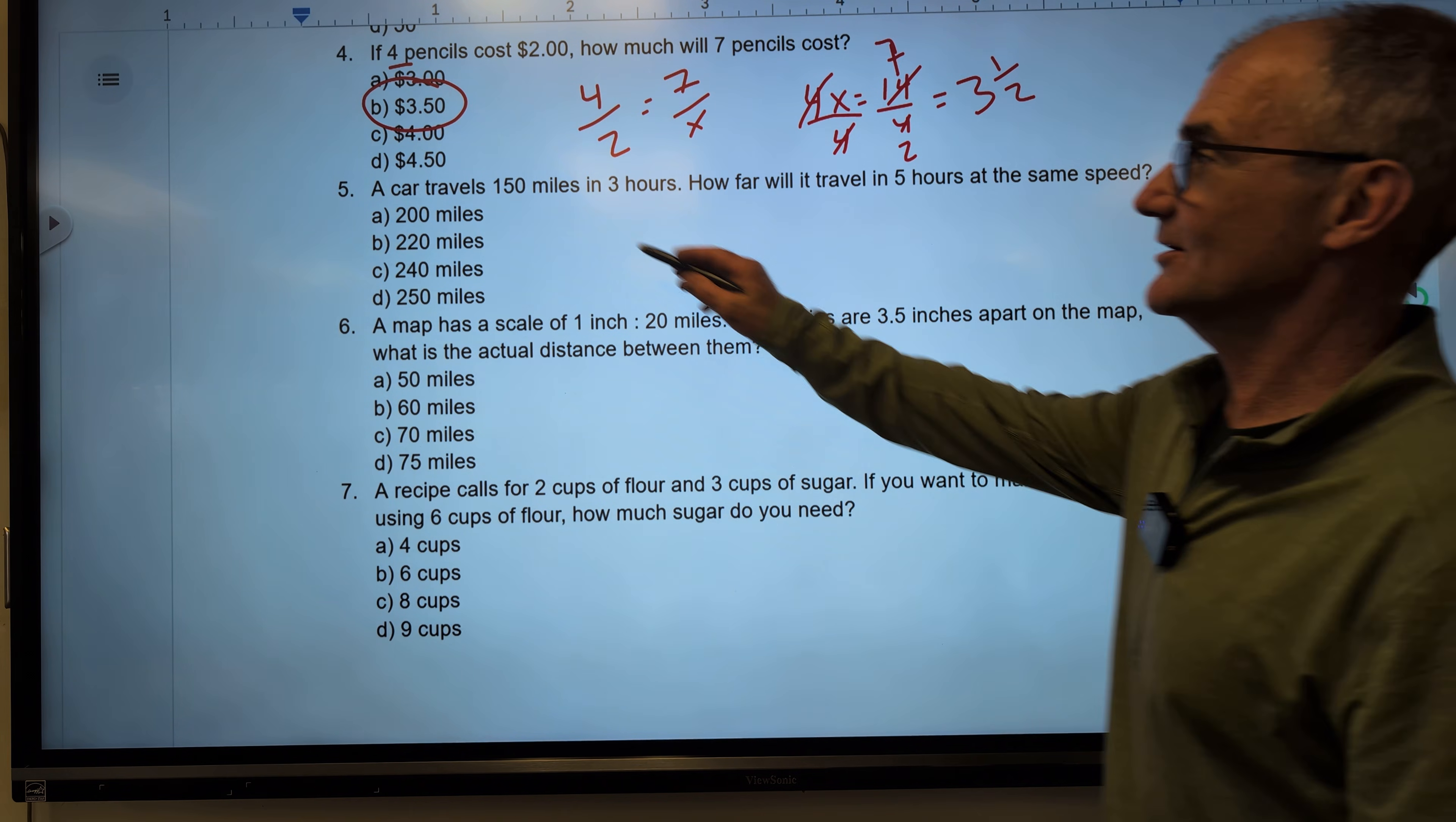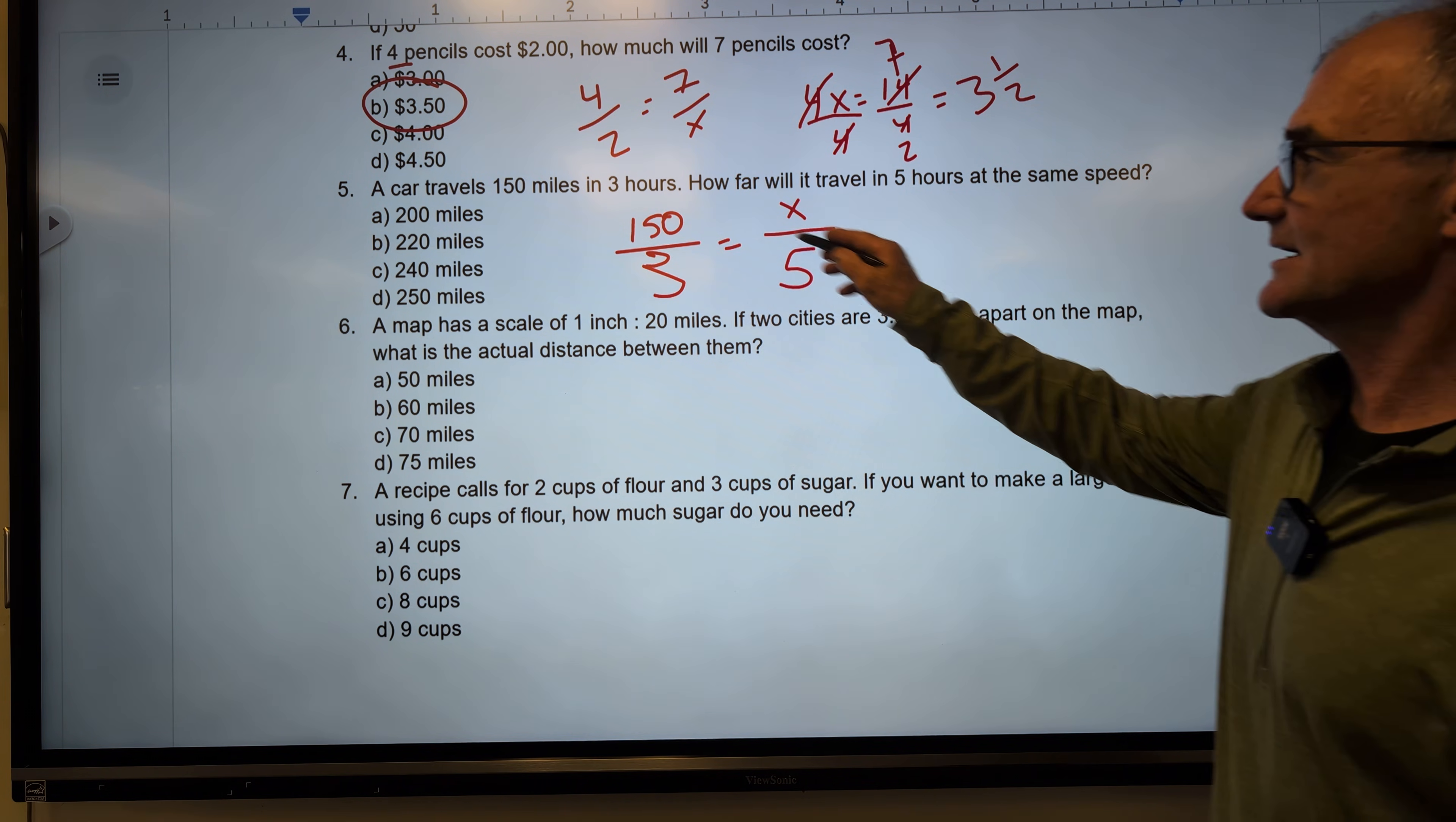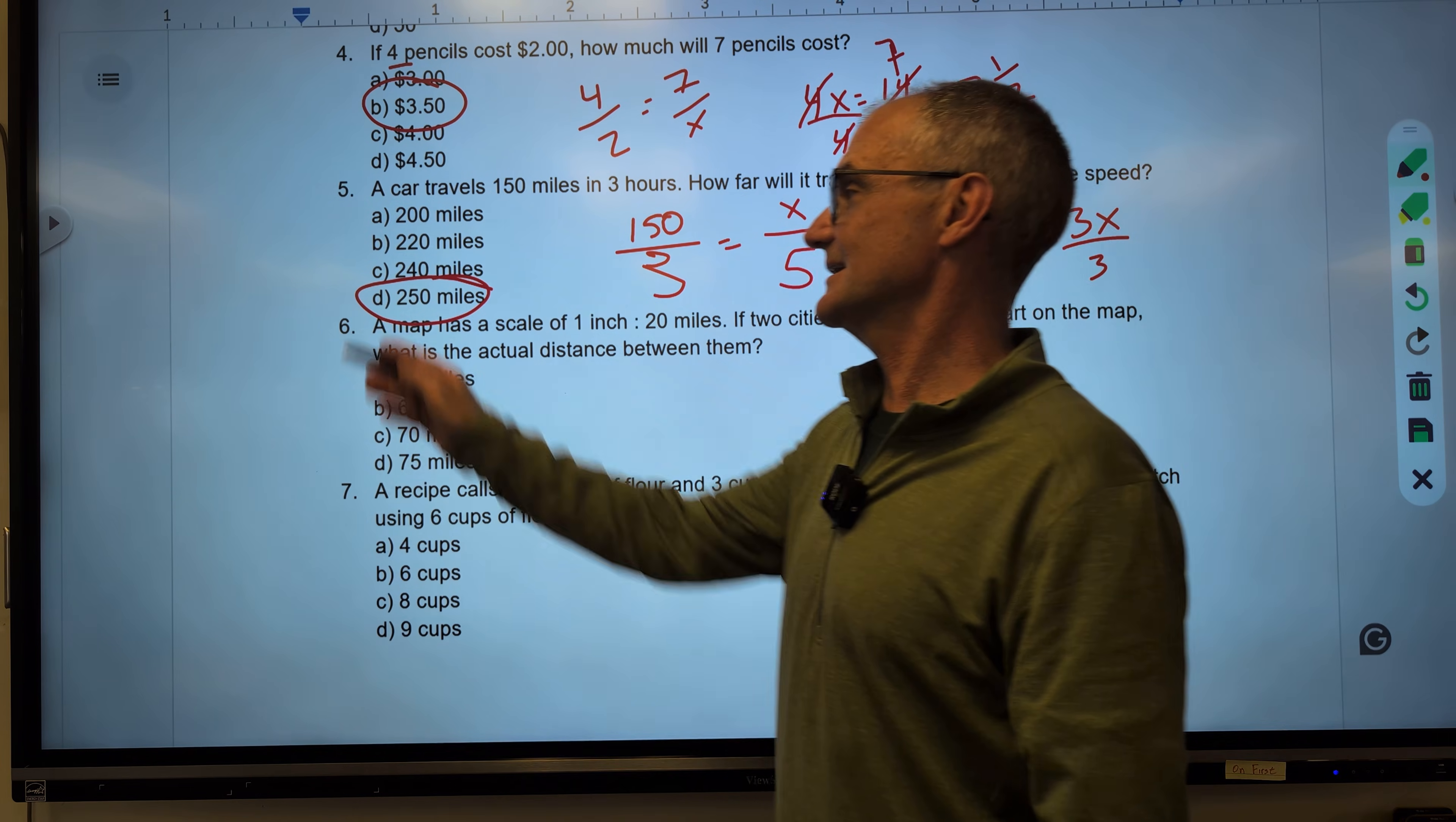Okay, number 5. A car travels 150 miles in 3 hours. How far will it travel in 5 hours? So again, we want to know how far will it travel, miles to miles, hours to hours. I cross multiply. 5 times 150 is 750. It is equal to 3 times x. Divide both sides by 3. 3 goes into there 250 times. 75 divided by 3 is 25, so 250. So the correct answer, answer D.